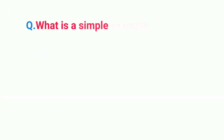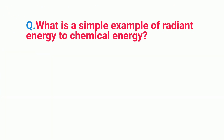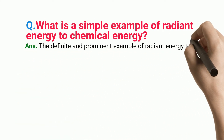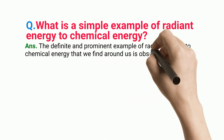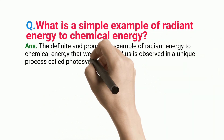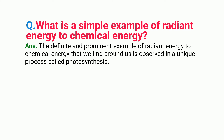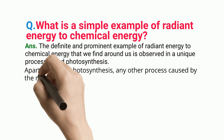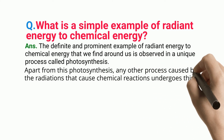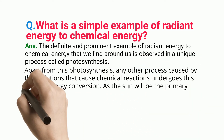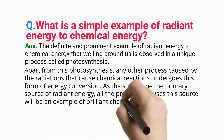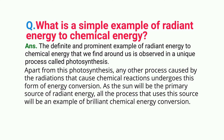The definite and prominent example of radiant energy to chemical energy that we find around us is observed in a unique process called photosynthesis. Apart from photosynthesis, any other process caused by radiations that cause chemical reactions undergoes this form of energy conversion. As the sun is the primary source of radiant energy, all the processes that use this source will be an example of chemical energy conversion.